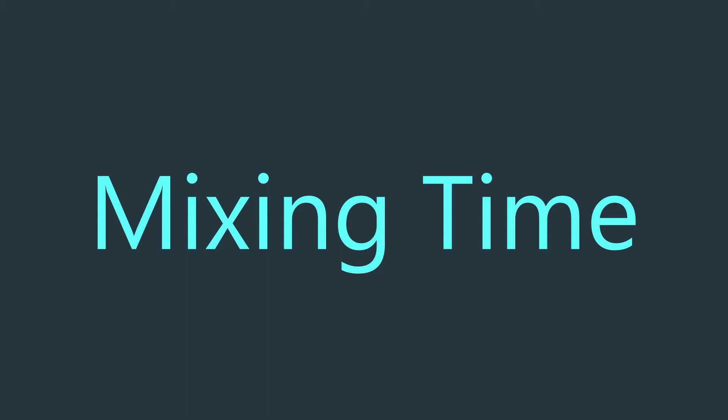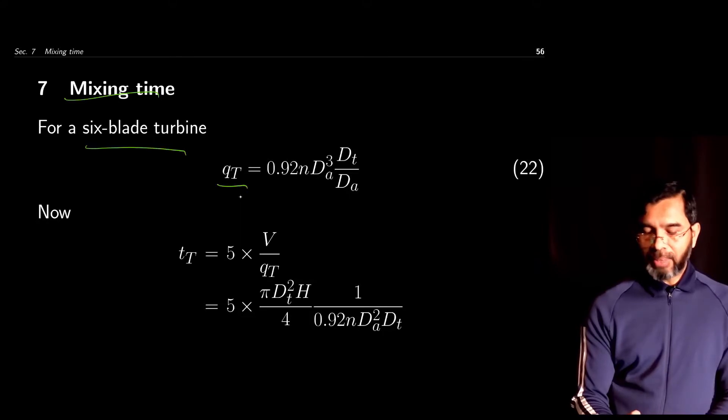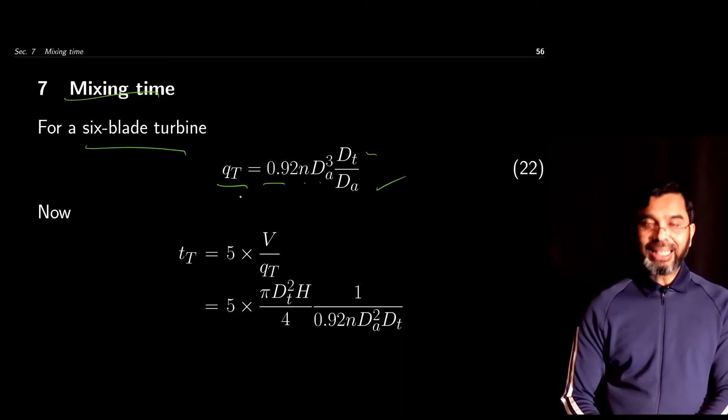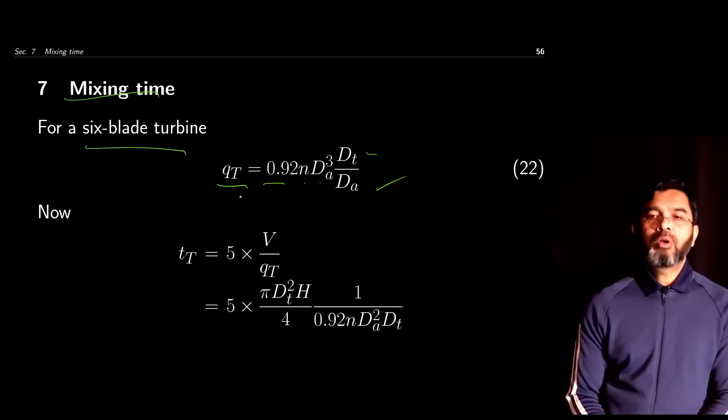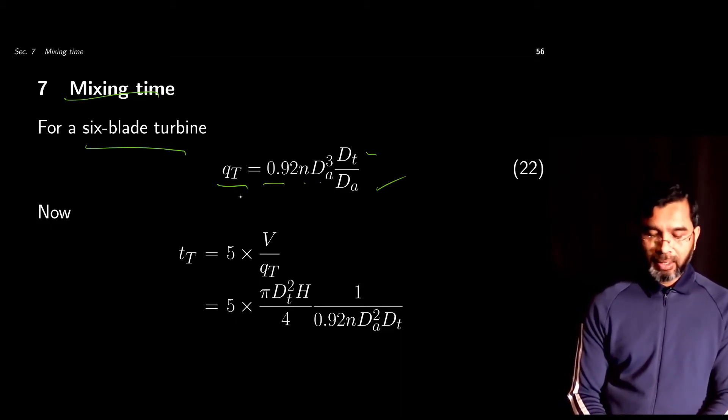An important calculation is the mixing time. For a six-blade turbine, qt can be represented as some constant times nda³ dt/da. As a thumb rule, mixing is considered to be complete when the liquid goes through the impeller five times.